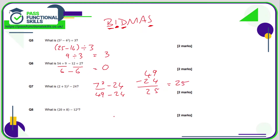Question 8: 20 multiplied by 8 minus 12 squared. We have brackets, so we do those first: 20 times 8 — 2 times 8 is 16, so 20 times 8 is 160. Before we do the subtraction, we need to do the indices: 12 times 12 is 144. Then 160 minus 144 — counting up from 144 to 160, that is 16. So the answer to question 8 is 16.